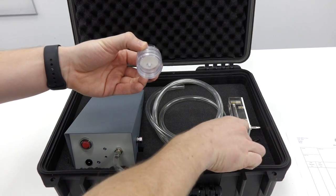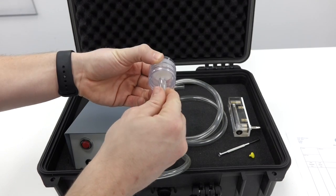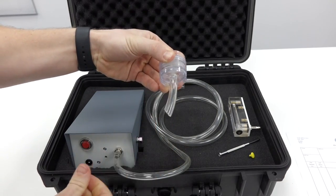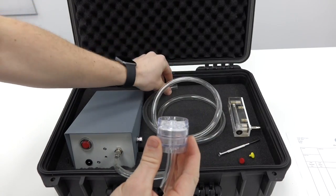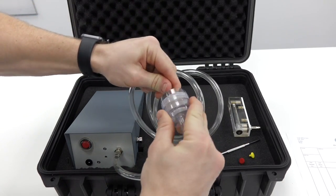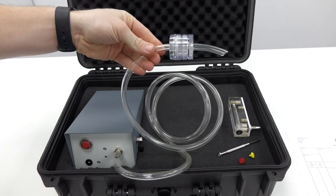Unscrew your cap, fit the short section of hose onto the inlet, then attach the cartridge to the pump. I am now ready to take my sample.